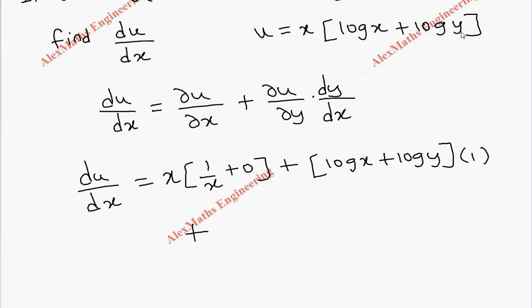So we have to differentiate this with respect to y, where x is constant. So let's write the constant as it is, open bracket. Log x is purely constant. So it is 0 and log y is 1 by y, bracket close. Then we have dy by dx.